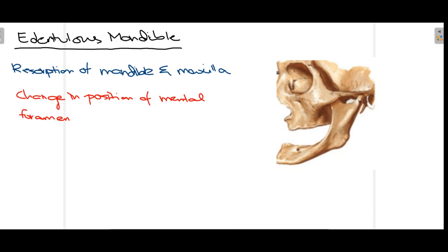In this video we talked about the basic anatomy of the mandible — starting with introductory points, moving towards basic anatomy, then the detailed anatomy with structures present on each individual part of the mandible, and lastly the edentulous mandible and its features. I hope this video was useful for you. If you liked it, please like, share, subscribe, and press the bell icon. Thank you for watching, see you next time.